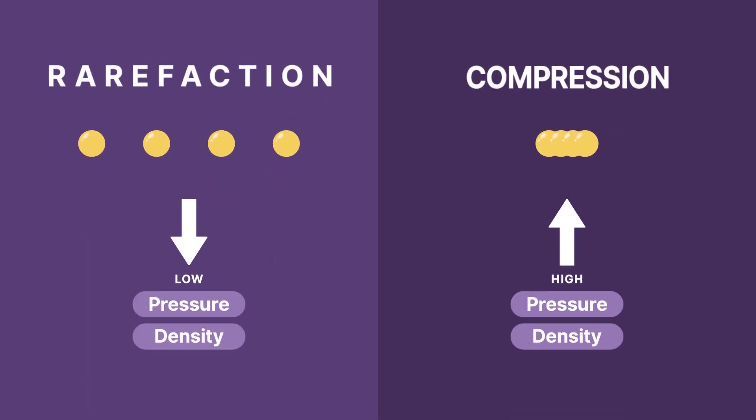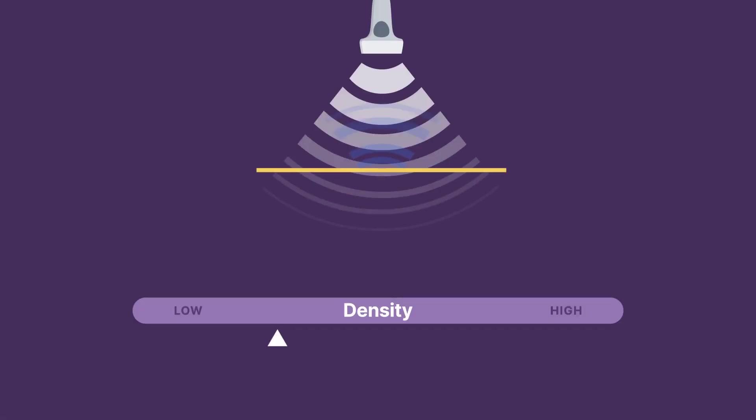Areas of compression result in high pressure and density, while areas of rarefaction result in low pressure and density. The difference in density determines how much of a sound wave reflects back as well as the strength of the echoes. We'll discuss these concepts more in a different lesson.